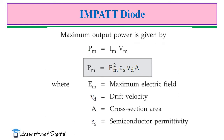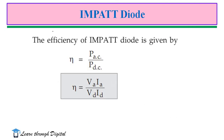Maximum output power is given by Pm = Im * Vm, that is current times voltage, where Pm = Em² * epsilon_s * Vd * A. Here Em is the maximum electric field, Vd is the drift velocity, A is the cross-sectional area, and epsilon_s is the semiconductor permittivity. The efficiency of the IMPATT diode is given by eta, the ratio of AC power (Pac) to DC power (Pdc).